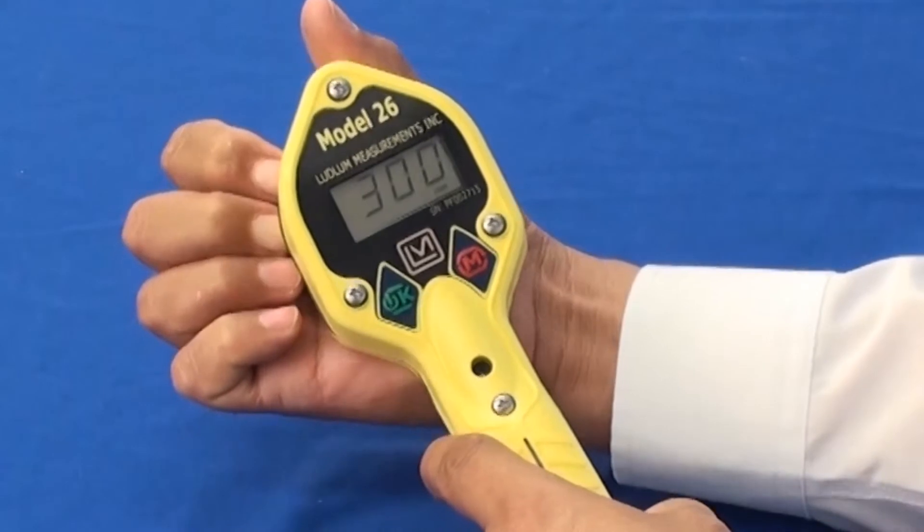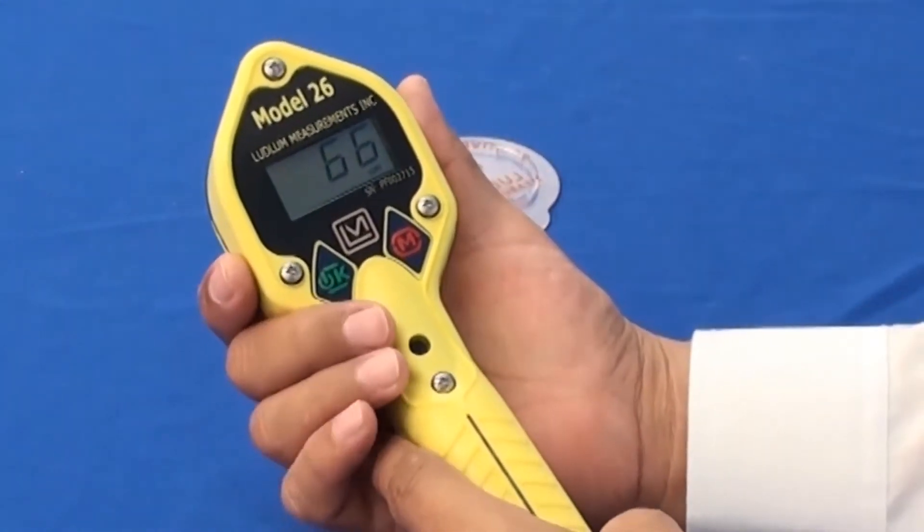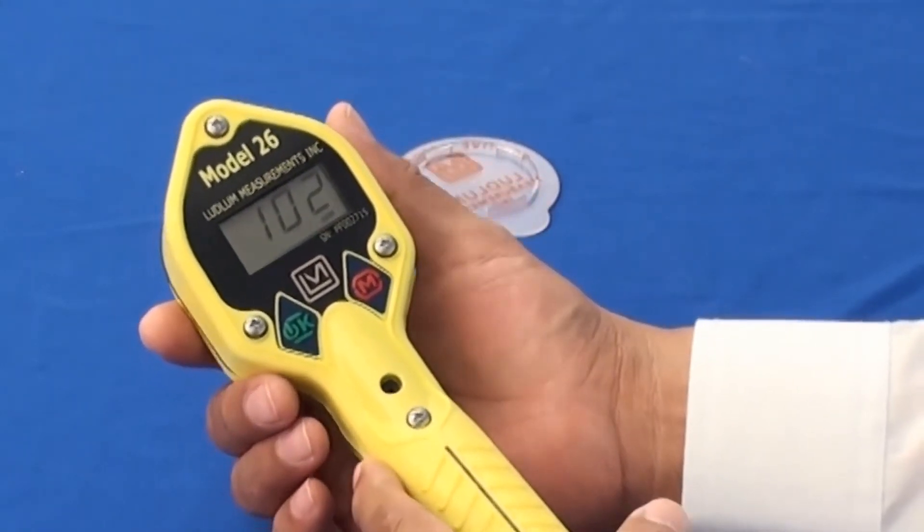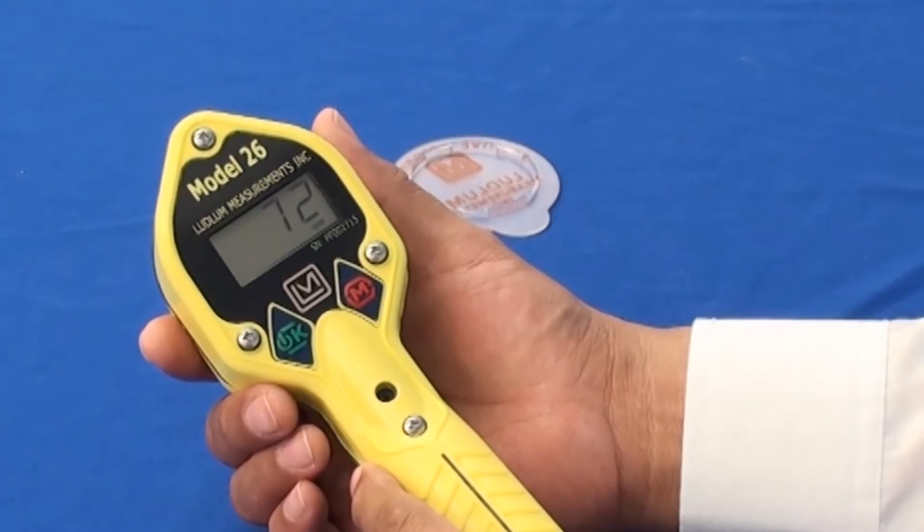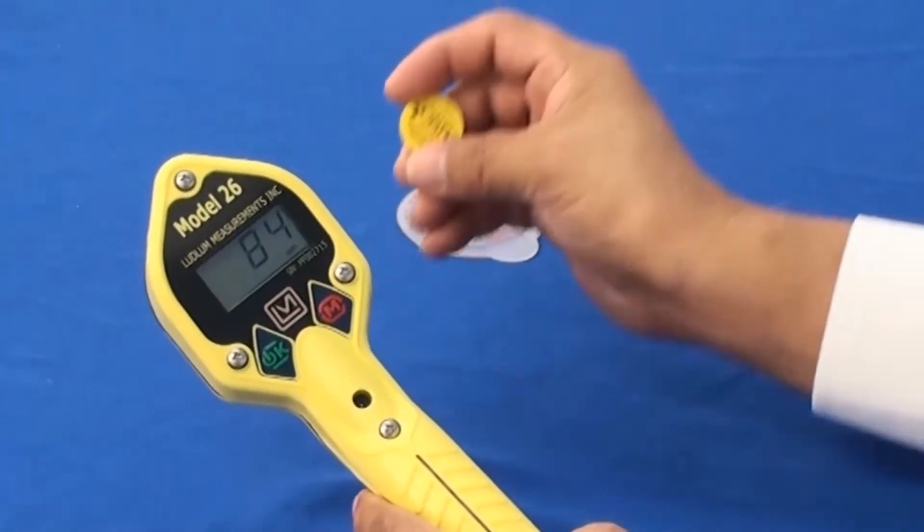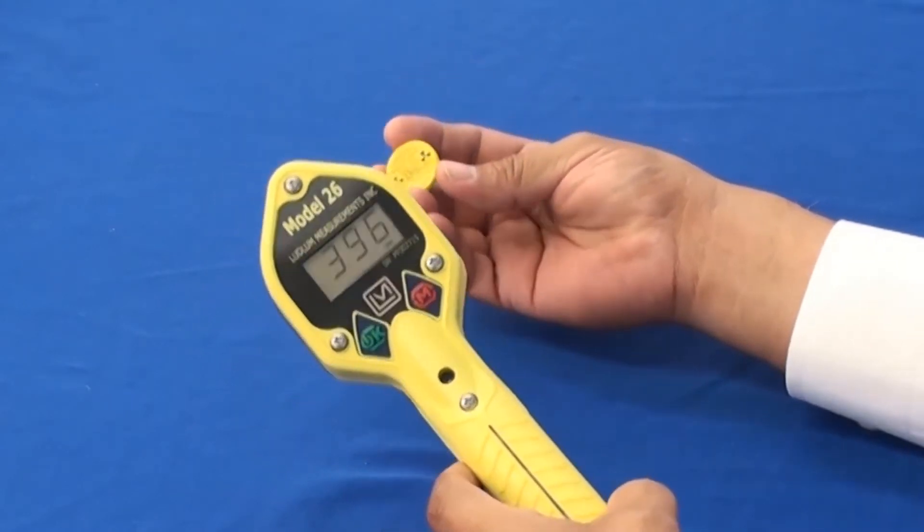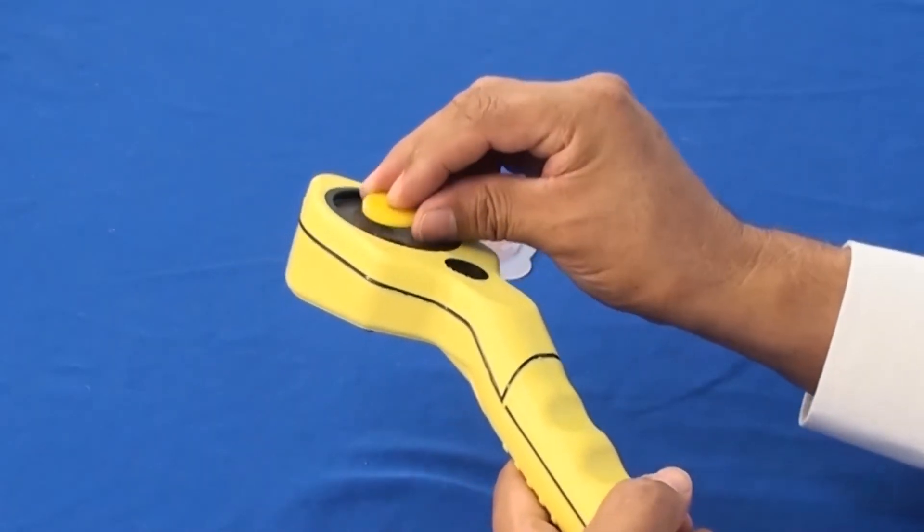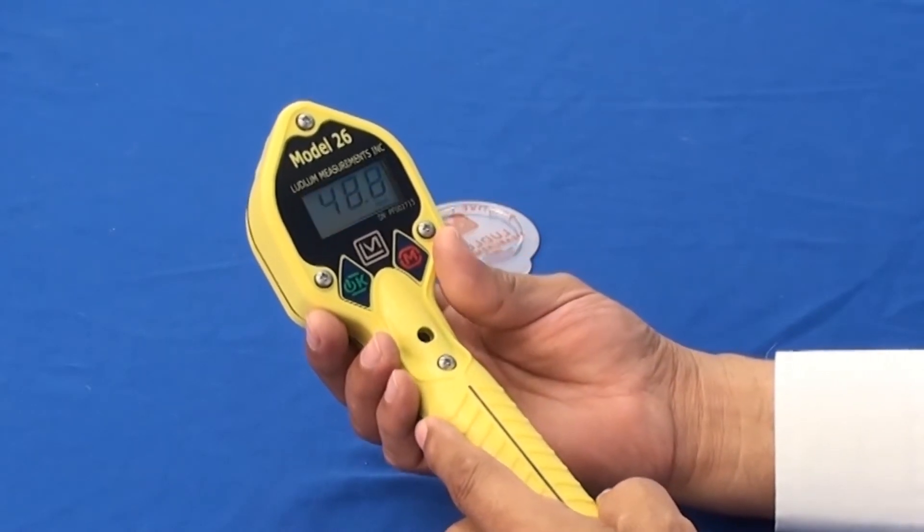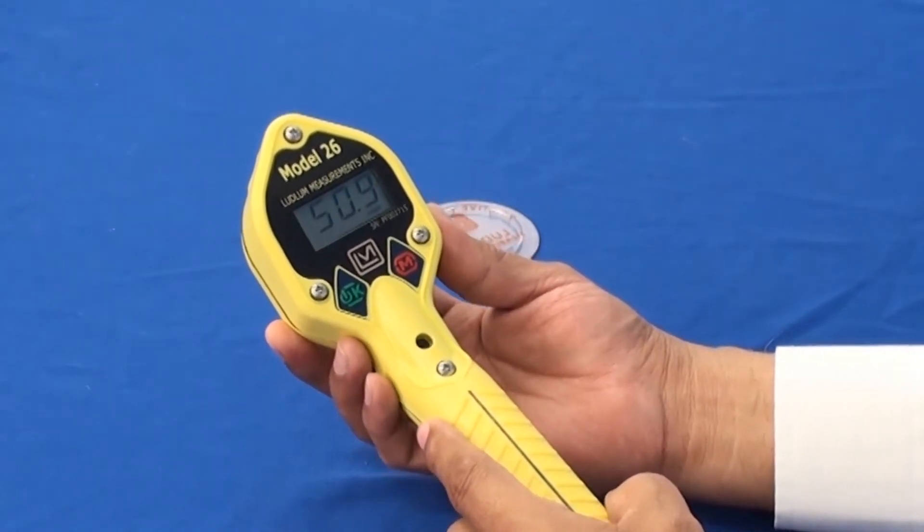With the purchase of your model 26, in the certificate of calibration, provided you've purchased a response check source, the factory will take the check source and do a factory response reading and document that in the comments section of your certificate of calibration. You would want to take note of the geometry or how the source was placed in relation to the detector. In this case, label side of source is placed on the protective screen to duplicate the readings that the factory did. You should be able to match the reading plus or minus 10 percent.